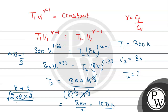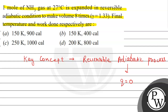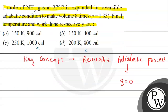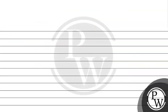The final temperature is 150 Kelvin. Options A and C have 150 Kelvin, so we can eliminate options B and D. Now we have to find the work done. Let's see the formula for work done in the adiabatic process using the first law of thermodynamics: change in internal energy equals heat plus work done.